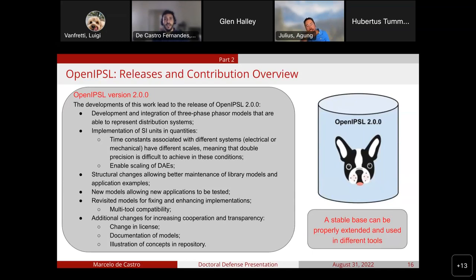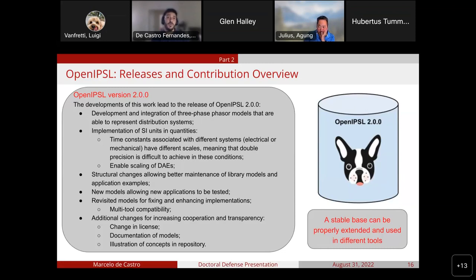OpenAPSL started back in 2014 and is a community effort. My contributions during the doctorate led to the release of version 2.0.0. The library now has a set of three-phase phaser models incorporated for the study of distribution systems. It also makes use of SI units with nominal values to scale DAEs and improve simulation of stiff systems. The new version has structural changes for improving maintenance, and many models have been revisited, retested, and enhanced for a stable base enabling multi-tool compatibility. Changes were also made to increase cooperation and transparency, such as changing licenses, better documentation, and establishing contribution guides and discussion pages.